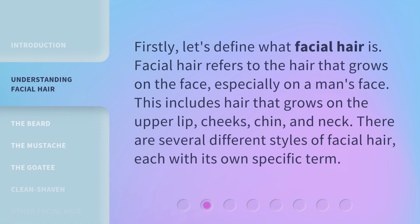Firstly, let's define what facial hair is. Facial hair refers to the hair that grows on the face, especially on a man's face. This includes hair that grows on the upper lip, cheeks, chin, and neck. There are several different styles of facial hair, each with its own specific term.